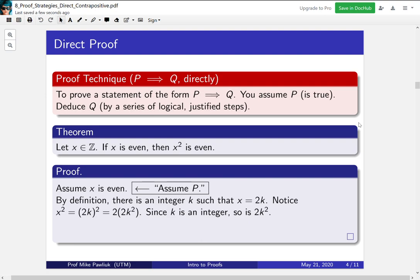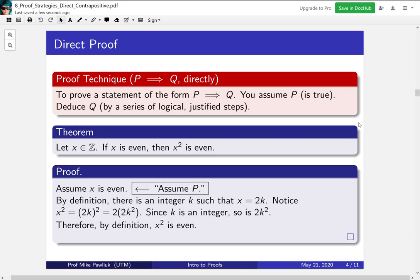And then when you square that, you get that x squared is 2 times 2k squared. So then since k is an integer, so is 2k squared. So we've shown that x squared is even. And this is in fact our Q part. We've deduced Q. Again, notice that we start with P. We start by assuming P explicitly. We make a series of logical conclusions. And then our final conclusion is Q. So that's what it means to prove an implication directly.